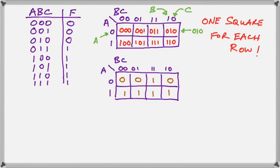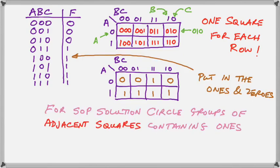Okay, now you see we have put in the zeros and ones of the function into their respective squares. For a sum of products solution, you need to circle groups of adjacent squares containing ones.